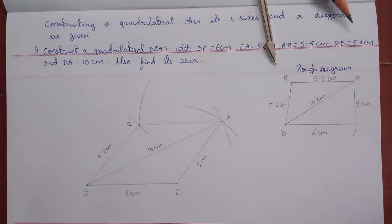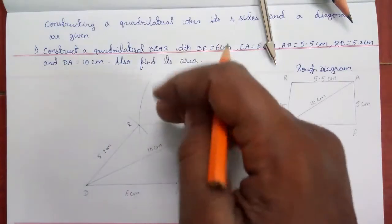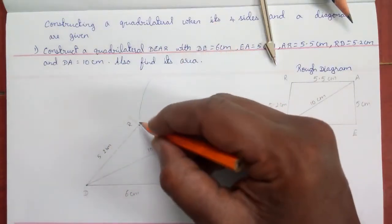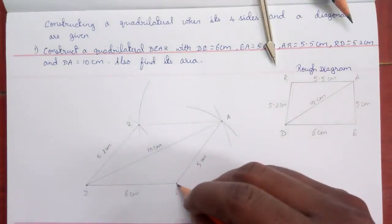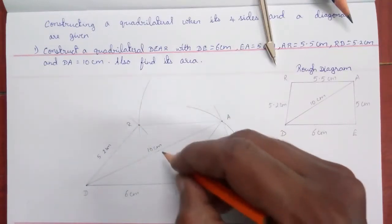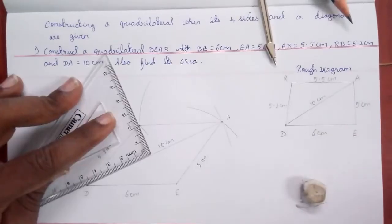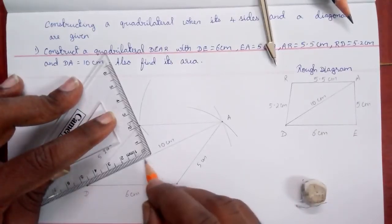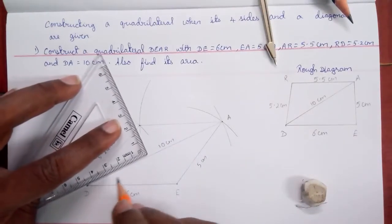Now we are going to calculate the area. We know the diagonal is 10 cm. From each vertex, we draw a perpendicular line to the diagonal to get the heights H1 and H2. Use a set square to draw these perpendicular lines accurately.